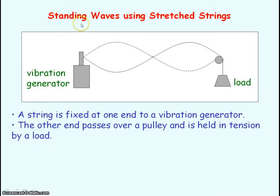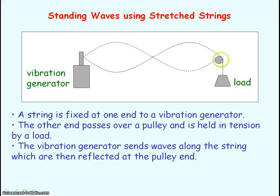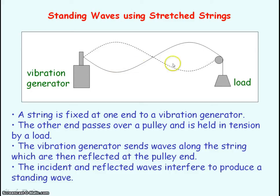Standing waves can be set up using stretched strings. One end of a string is attached to a vibration generator and the other end is held under tension by a load. The vibration generator vibrates and sends a wave along the string. At the pulley end, the wave is reflected back down the string, so you have two progressive waves — the incident wave and the reflected wave — travelling in opposite directions and interfering to produce a standing wave.